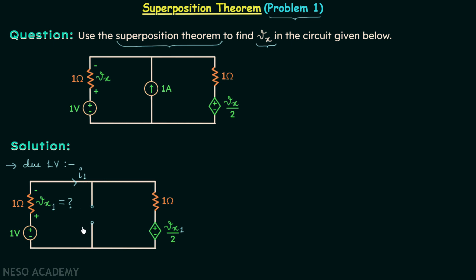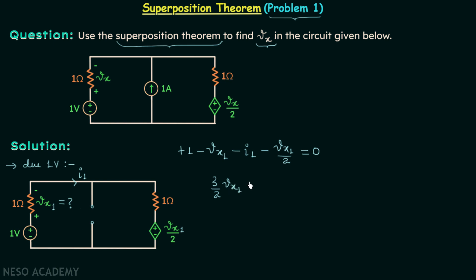Applying KVL around the loop: plus 1, minus Vx1, minus I1 times 1, minus Vx1 divided by 2, equals 0. Simplifying this gives us 3 over 2 times Vx1, plus I1, equals 1. We will call this equation number 1.